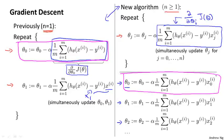of course, because in our notational convention, we had this x0 equals 1 convention, which is why these two terms that I've drawn the magenta boxes around are equivalent.